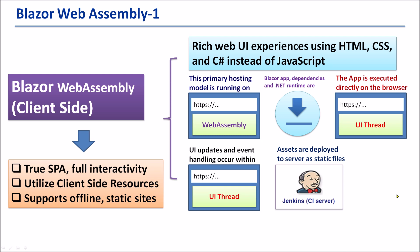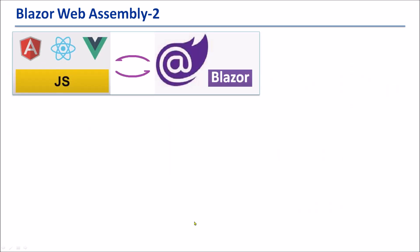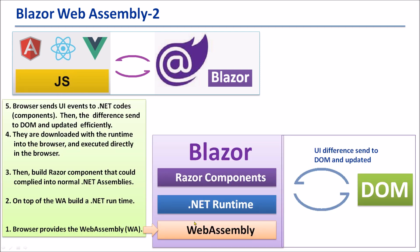Therefore, Blazor WebAssembly is a true single-page application with full interactivity, utilizing client-side resources and supporting offline static sites. This model offers a direct competitor to JavaScript-based single-page applications such as Angular, React, and Vue.js. In general, Blazor WebAssembly applications run in the browser on top of a WebAssembly-built .NET runtime. Razor components compile into normal .NET assemblies, are downloaded with the runtime in the browser, and executed directly. The browser sends UI events to the .NET code, then differences are sent to the DOM and updated efficiently.